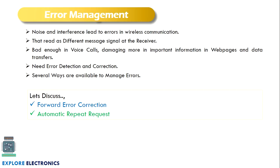Now let us see error management. Due to noise and interference there will be a chance of occurrence of error in the transmission. If you are transmitting a digital signal, due to some error there might be a chance of a bit flip — this 1 will be read as 0 at the receiver. This is bad enough in voice calls and also damaging in web pages and data transfers like emails. So we need to address this issue at the receiver end so that the error will be mitigated and the corrected codeword is generated.